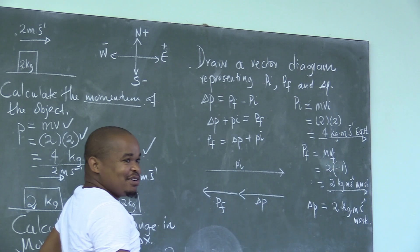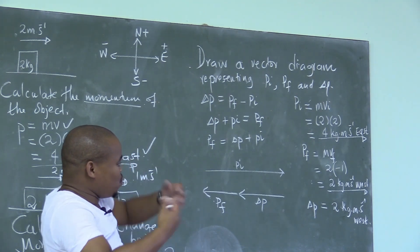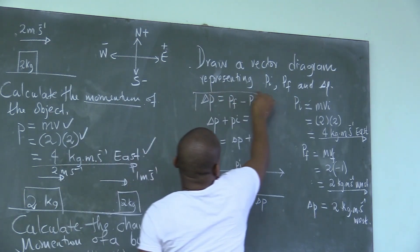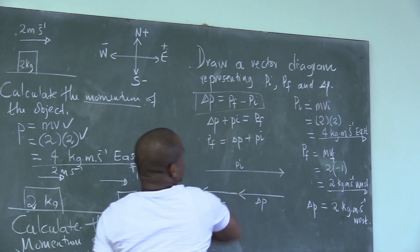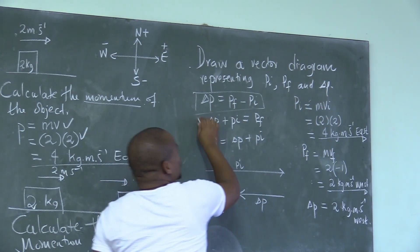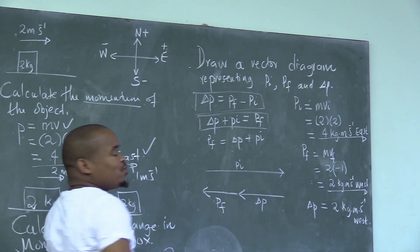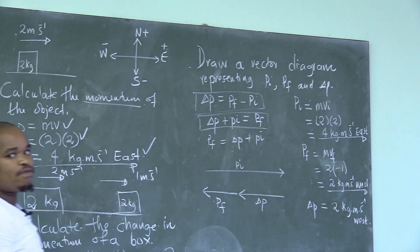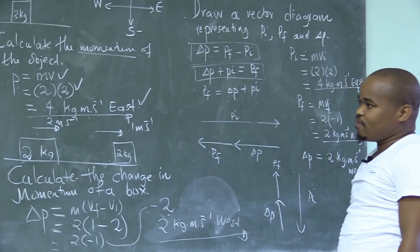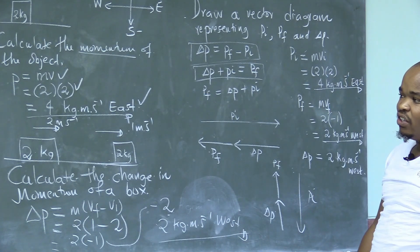Now, by the look of things, this doesn't make sense if you were to talk about the Osemini Selea formula. But this now makes sense, because you know, this is how you do the addition of vectors. That's when it comes to the momentum and the change.